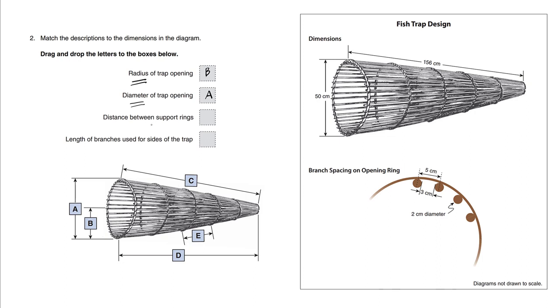And what's the distance between the support rings? So we see that these little circles—1, 2, 3, 4, 5, 6—they support this fish trap. So the distance between support rings is going to be E.